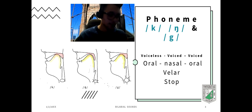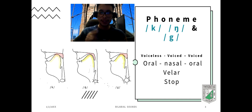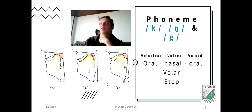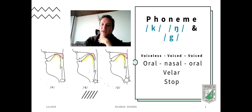The sound for the one that looks like an n with a g is pronounced like [ŋ]. It is a velar voiced stop consonant because the airflow is not continuing.